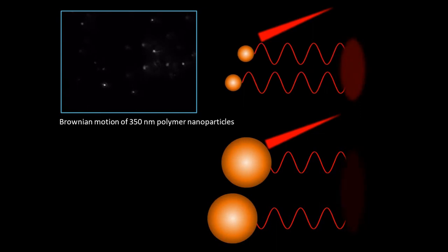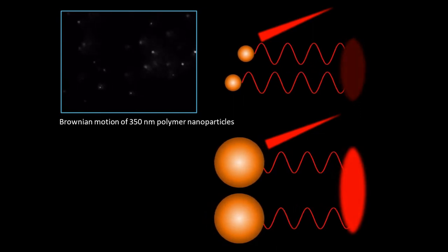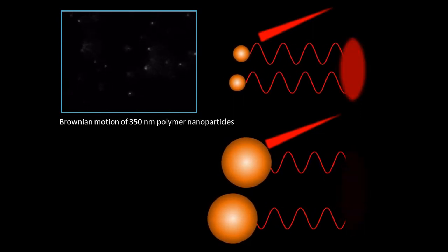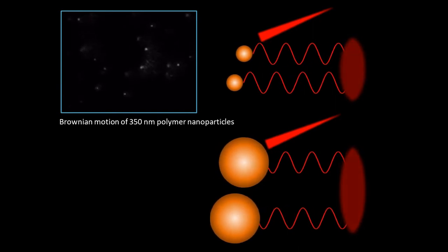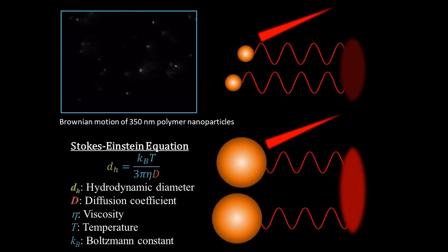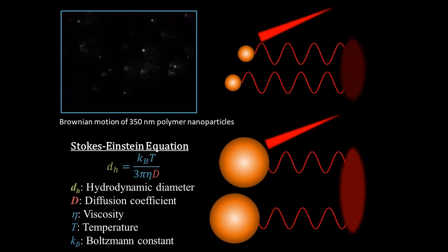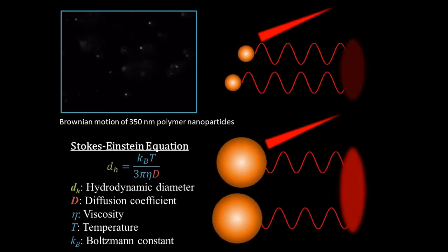The light scattered by individual particles will interfere constructively or destructively with each other depending on their positions relative to the detector, and microscopic particles are always moving in a liquid due to brownian motion. As a result, the light scattered by these particles will appear to flicker as particles jiggle around in the spot of the laser beam.